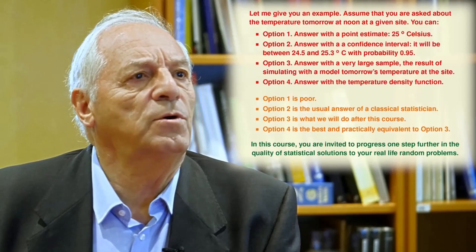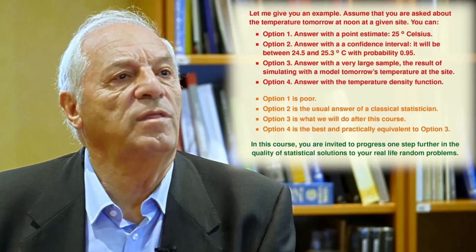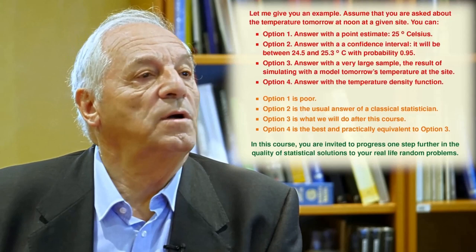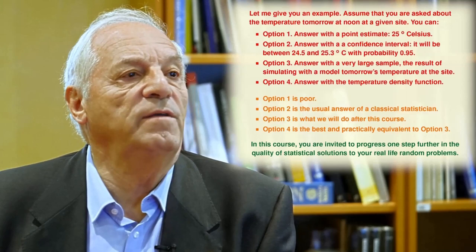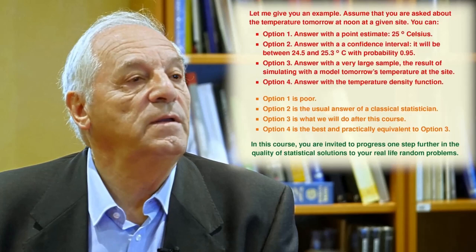Let me give you an example. Assume that you are asked about the temperature tomorrow at noon at a given site. You can, option one, answer with a point estimate — for example, 25 degrees Celsius. Option two, answer with a confidence interval — it will be between 24.5 and 25.3 degrees with probability 0.95.